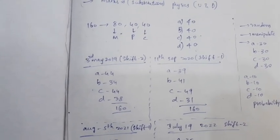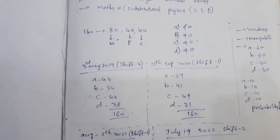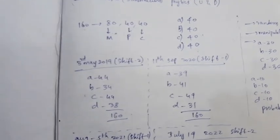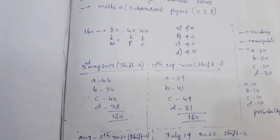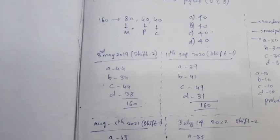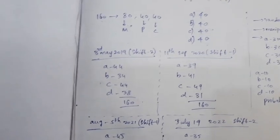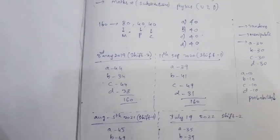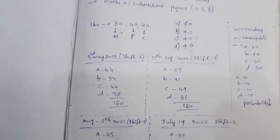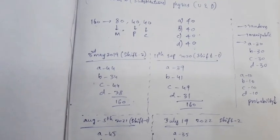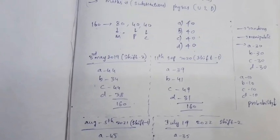I am going to research this in 2019, 2020, 2022, and 2021. If you have papers from those 4 years, you can download the answer keys and count each option manually. In 2019, 3rd May Shift-2, the options are: A is 44, B is 34, C is 44, D is 38. Total 160 questions.